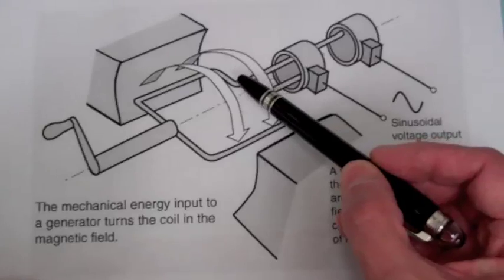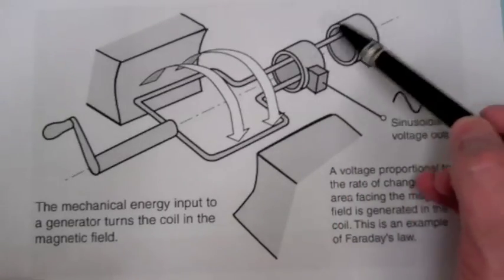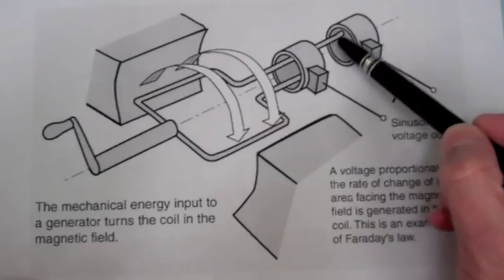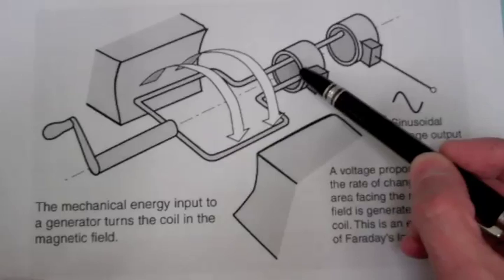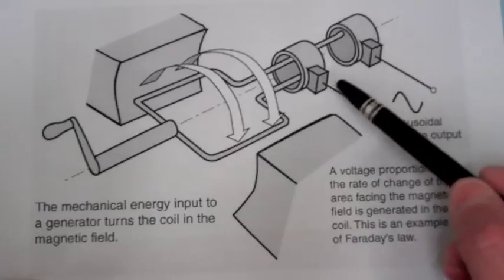Now since the coil is rotating we need slip rings to connect to it. So this part of the coil is going to ride along the inside of this slip ring and this part of the coil here is going to ride along the inside of this slip ring so we can tap our AC voltage at these two connections.